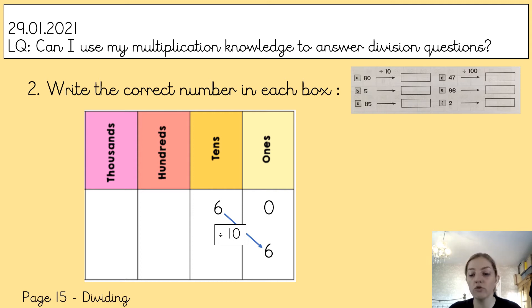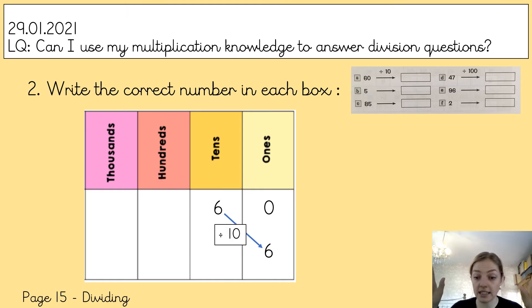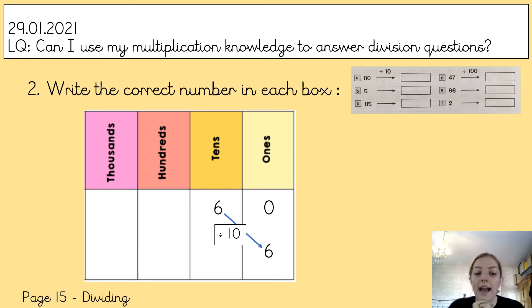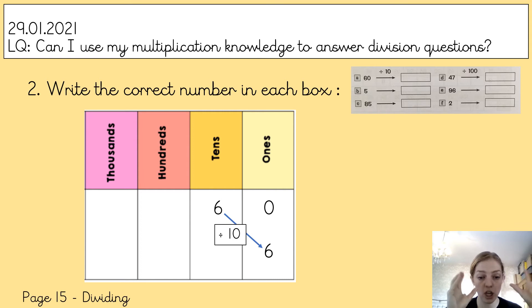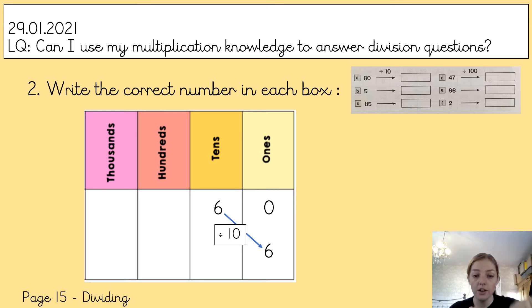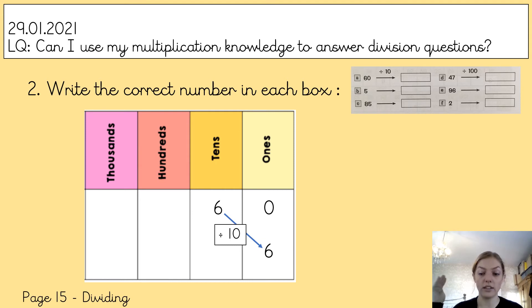I would draw out a grid with thousands, hundreds, tens, and ones, and write the number in the top row. So for 60, I've got six tens and zero ones — I write 6 in the tens column and 0 in the ones. Since I'm dividing by 10, I go back one place value. I can see that 10 goes into 60 six times, because 6 times 10 equals 60. So 60 divided by 10 equals 6.